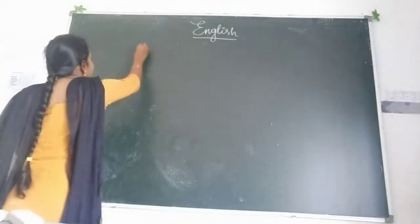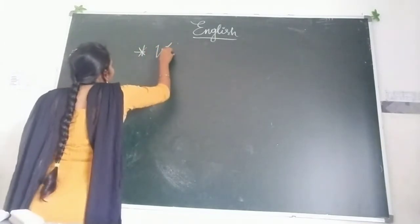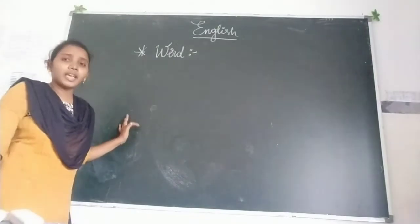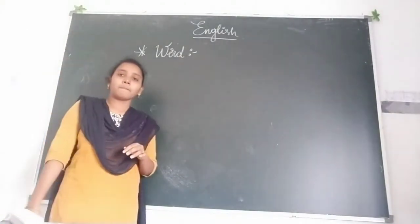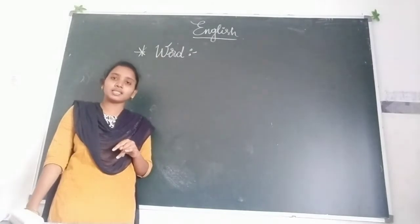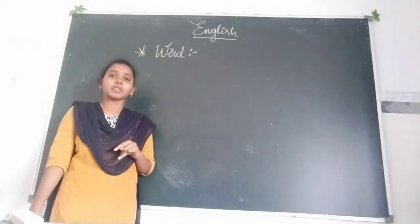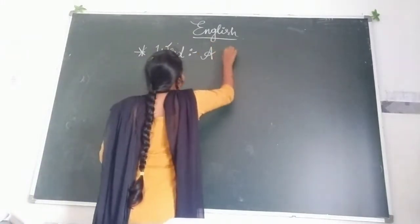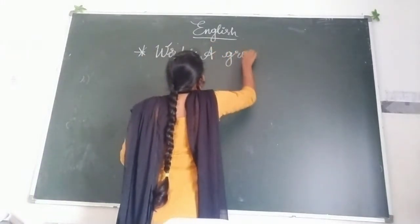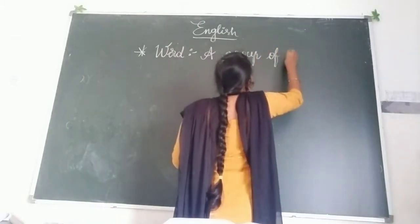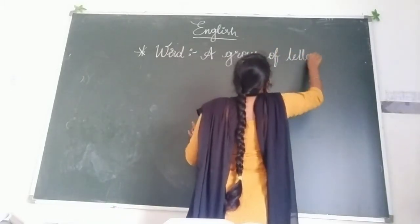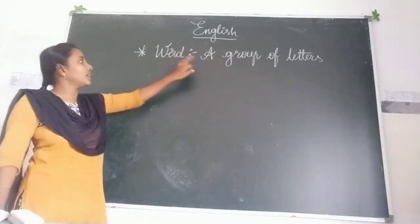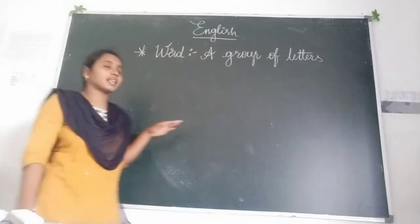Keep the start mark and write 'Word'. What is a word children? Do we have words in English? Yes, we are having words in English. What is a word? A group of letters. Write it like this children — word: a group of letters.